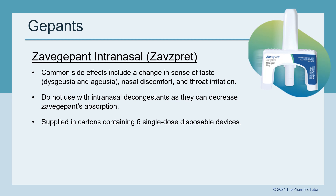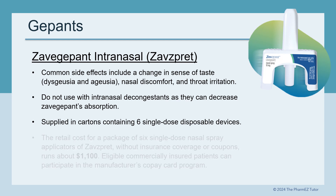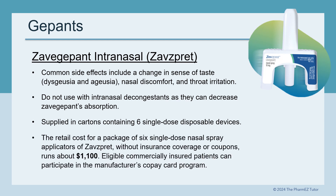It is applied in cartons containing 6 single-dose disposable devices. The retail cost for a package of 6 single-dose nasal spray applicators of Zavspret without insurance coverage or coupons runs about $1,100. Eligible, commercially insured patients can participate in the manufacturer's copay card program.